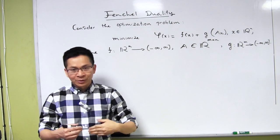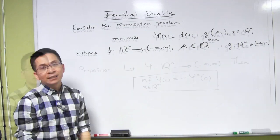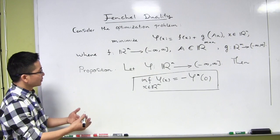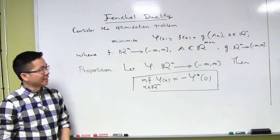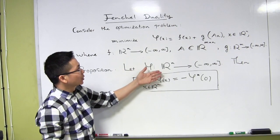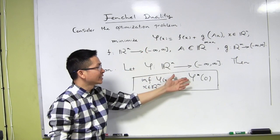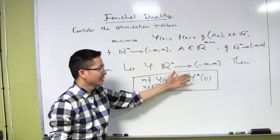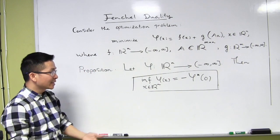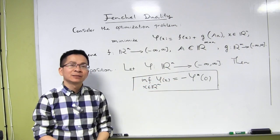Now I'm going to get into the details of Fenchel duality. The first proposition gives a very important connection between the optimal value of this optimization problem and the Fenchel conjugate of the function φ. Let me go ahead and give the detailed proof of this proposition.